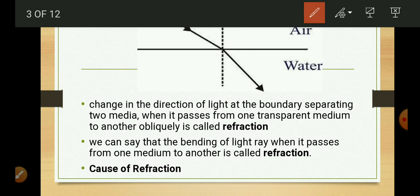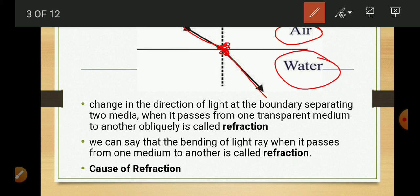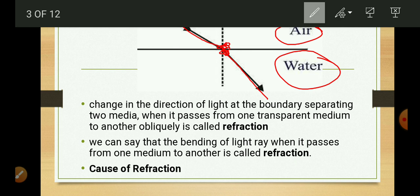As you can see in this diagram, one medium is air and another is water. This is the incident ray which travels from air medium to water medium. At the point of incidence — at the boundary of air and water — the bending of light takes place, and this bending of light is called refraction of light. We can also define it as the change in the direction of light at the boundary separating two media when it passes obliquely from one transparent medium to another.